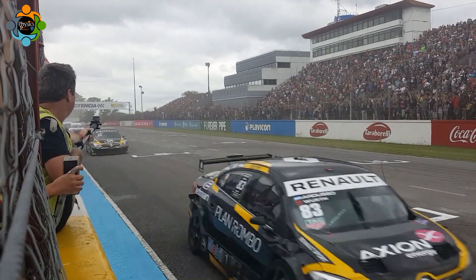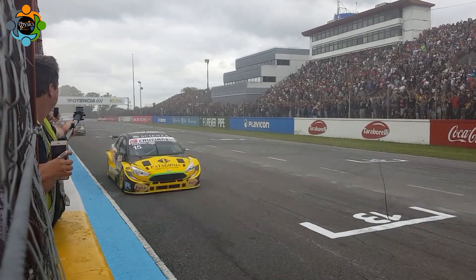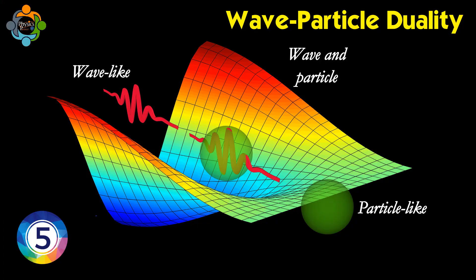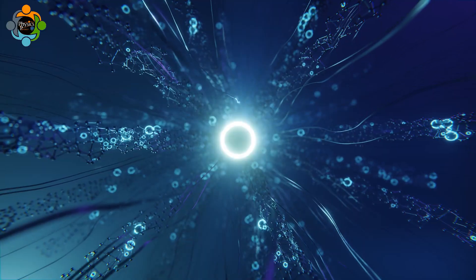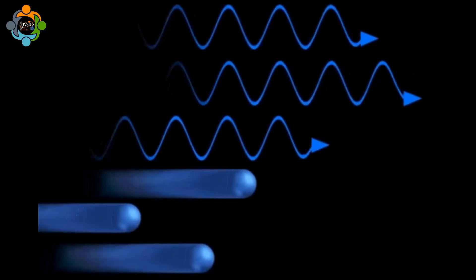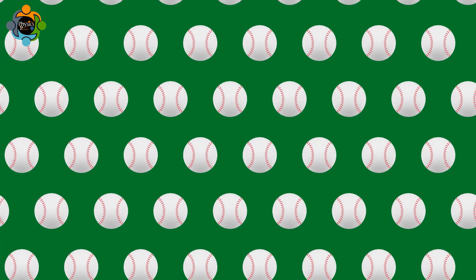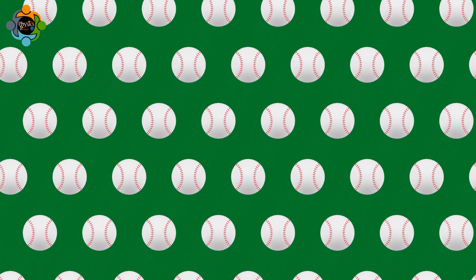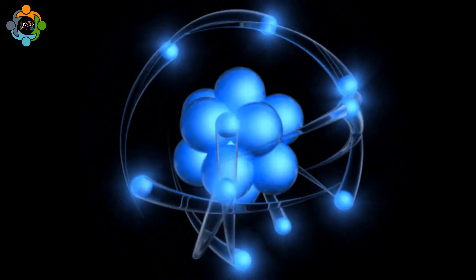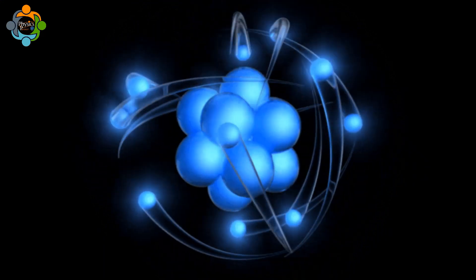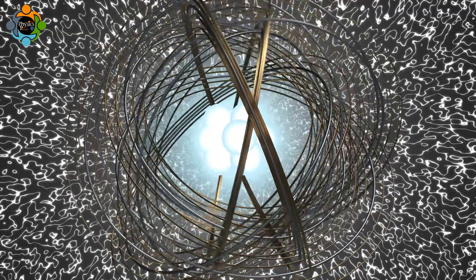Number five: wave-particle duality. Remember those electron clouds? Well, electrons can behave both as particles and as waves. It's as if a baseball could suddenly turn into a ripple in a pond. This dual nature is key to understanding how electrons move and interact in atoms.